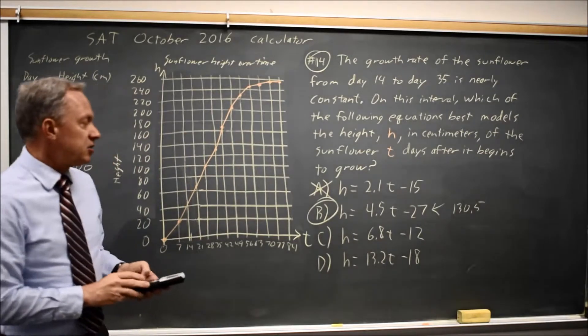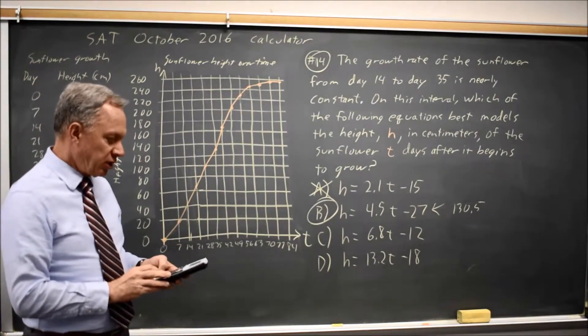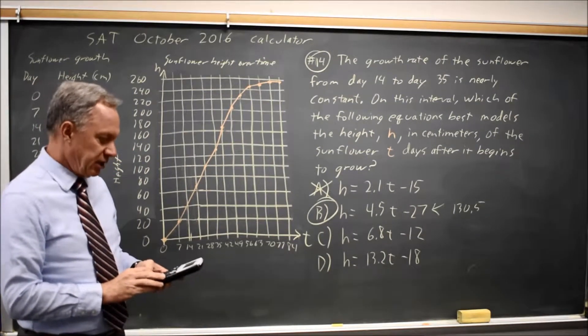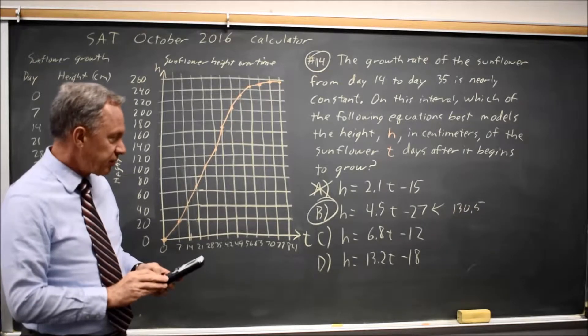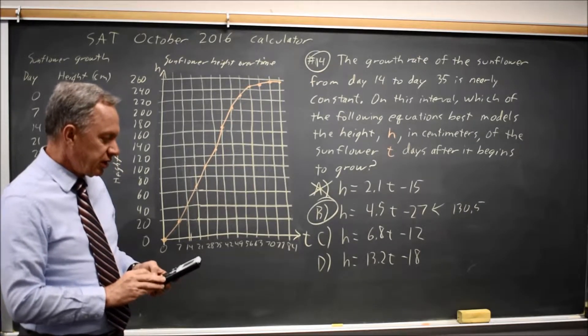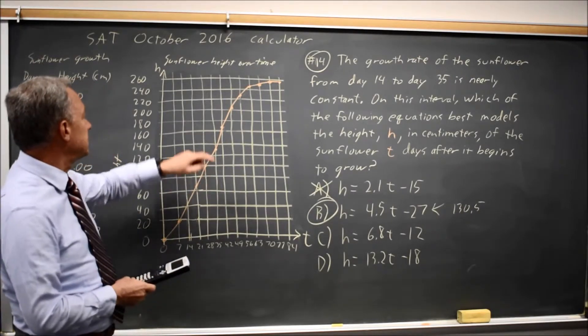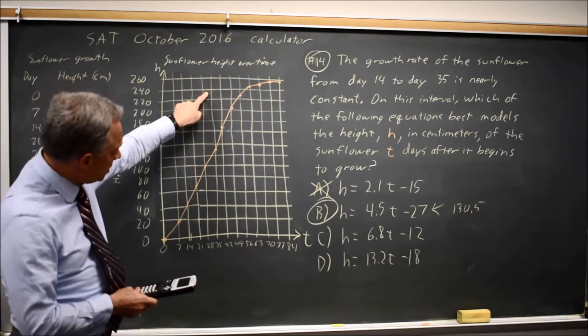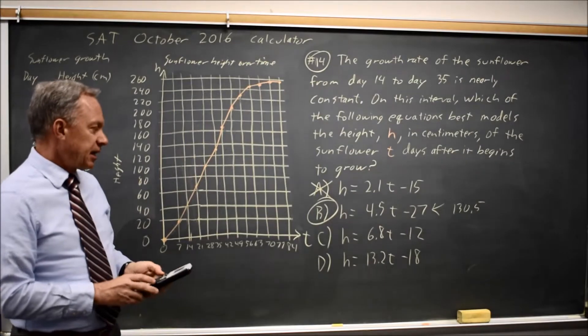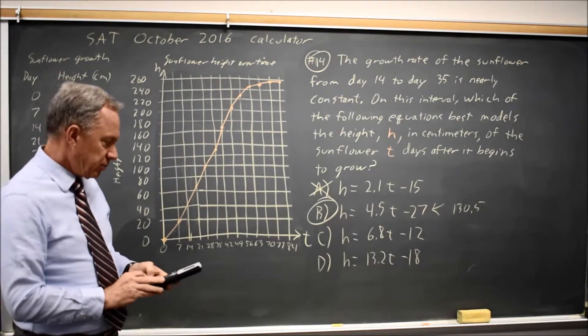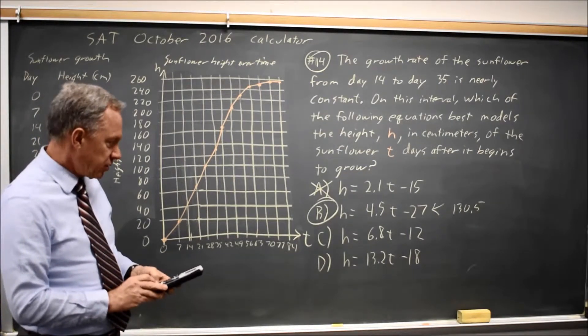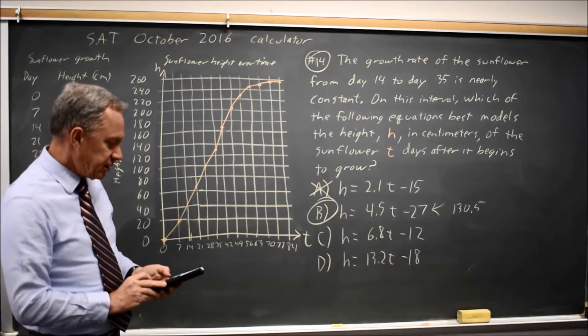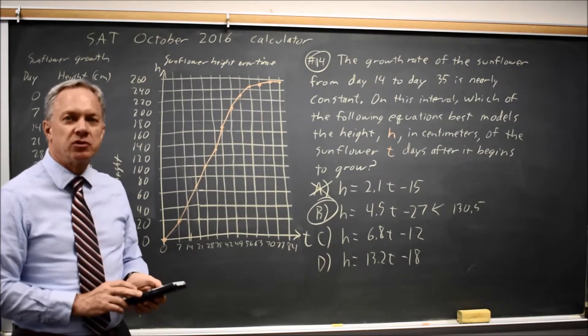But I have to check the others to see if another one passes through that point if this was my only method of solution. So 6.8 times 35 and then minus 12 is 226, which is way up here, more or less. And choice D, 13.2 times 35 minus 18 is huge, 444 centimeters.